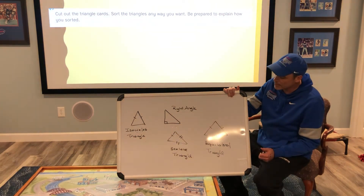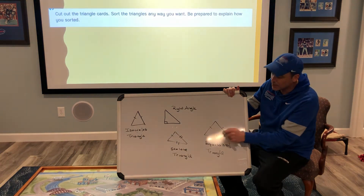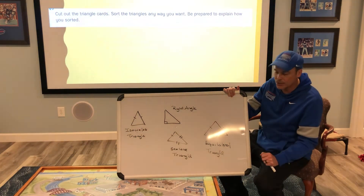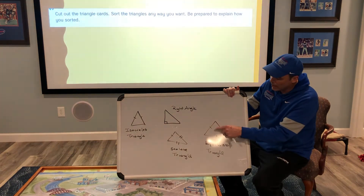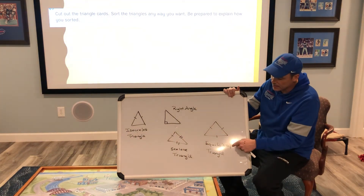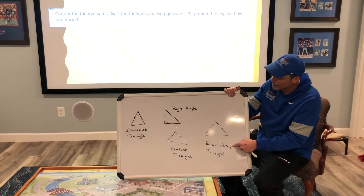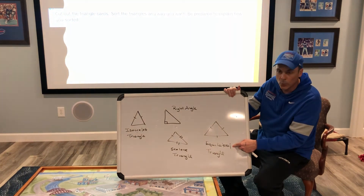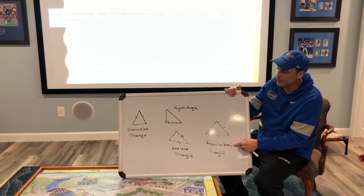For example, you'll notice that there's only one tick mark on each of the lines. When they all have one tick mark, you will know that all three sides are the same measure, therefore it's an equilateral triangle.